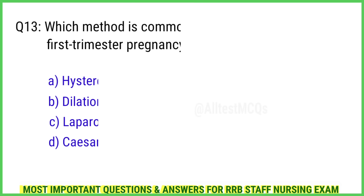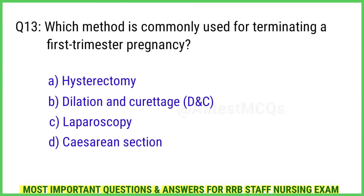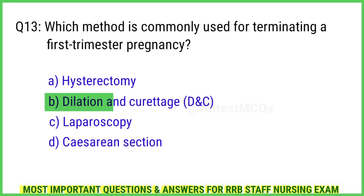Question 13. Which method is commonly used for terminating a first trimester pregnancy? The right answer is Option B: Dilation and curettage.